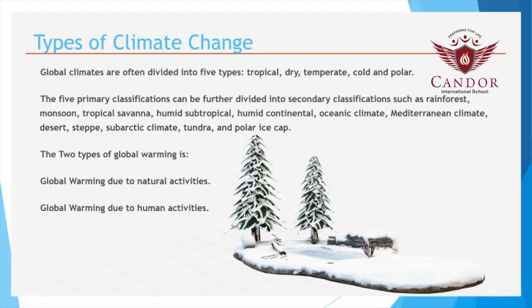These five types can be further divided into a secondary classification which includes rainforest, monsoon, tropical savannah, humid subtropical, humid continental, oceanic climate, Mediterranean climate, desert, sub-arctic climate, tundra and polar ice cap.